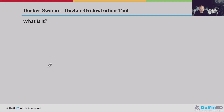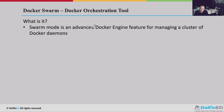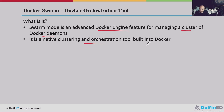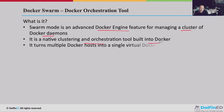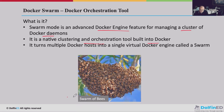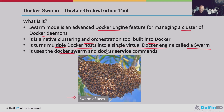Docker Swarm is a Docker orchestration and management tool. It is an advanced Docker engine feature for managing a cluster of Docker daemons. Docker Swarm is the umbrella that manages the daemons and controls resources across all of them. It's a native clustering and orchestration tool built into Docker — part of your Docker engine even if not started by default. The swarm concept comes from the world of bees: a swarm turns multiple Docker hosts into a single virtual Docker engine called a swarm, using the Docker swarm command and the Docker service command.